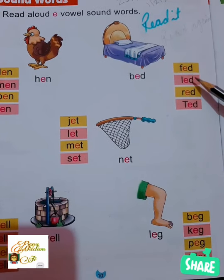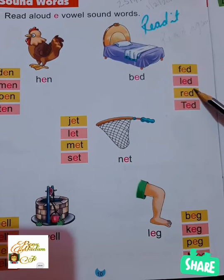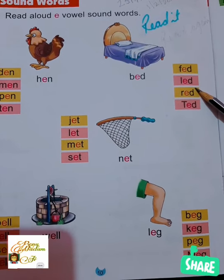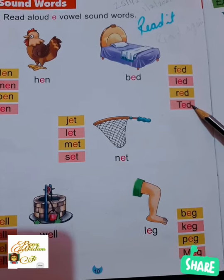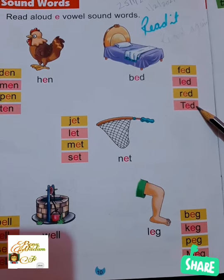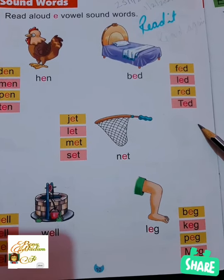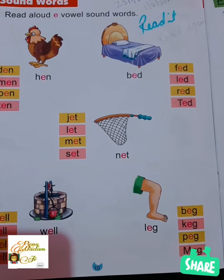F, E, D — fed. L, E, D — led. R, E, D — red. T, E, D — ted.